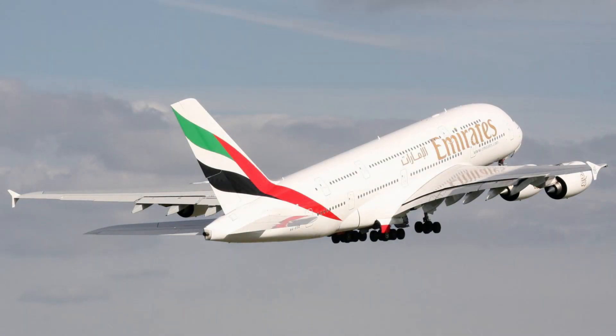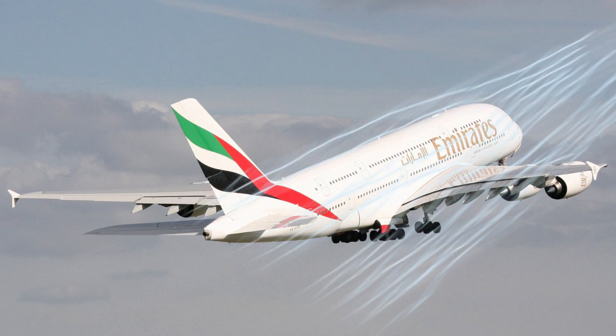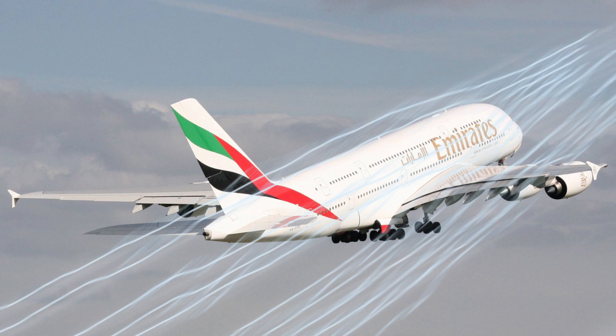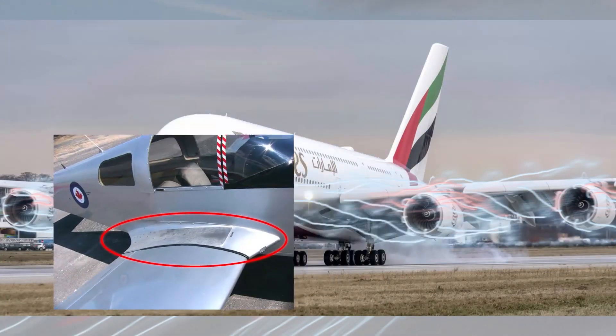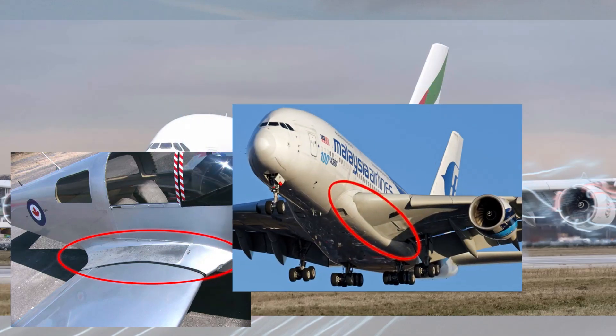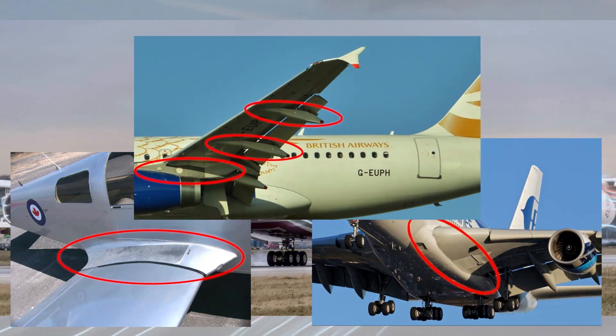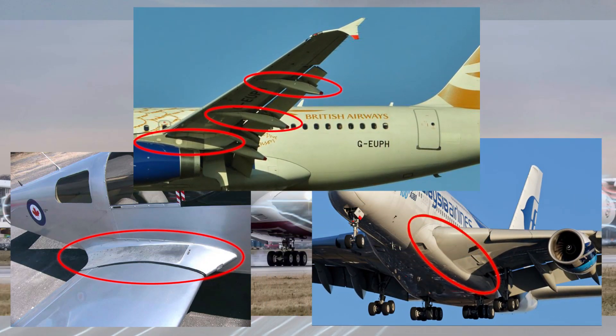The interference drag is the type of drag which occurs when the air flows from different components collide as they try to flow in the same area and create a turbulent flow of air which increases the drag. This is most prominent in areas where there are intersecting components, for example the area between the wings and the fuselage, between the stabilizers and the fuselage, or between the engines and the wing. This type of drag is minimized by using fairings which smooth out the area in between the adjacent components to make the collision of their separate air flows less aggressive when they merge together.